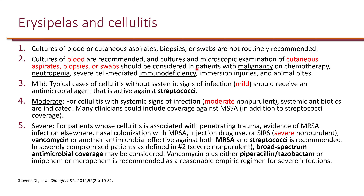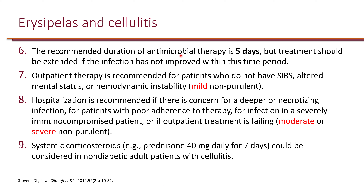Here are the IDSA guideline recommendations in accordance with the previous discussion — please pause the video to review these. One important point to emphasize: the duration of treatment for cellulitis is five days. Unless the patient is not improving, five days is sufficient. Additionally, the guidelines state that systemic corticosteroids — for example, prednisone 40 mg daily for seven days — can be considered in non-diabetic adult patients to help control inflammation at the site of infection.